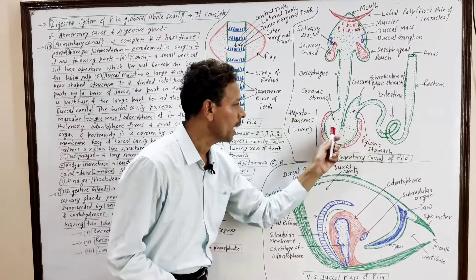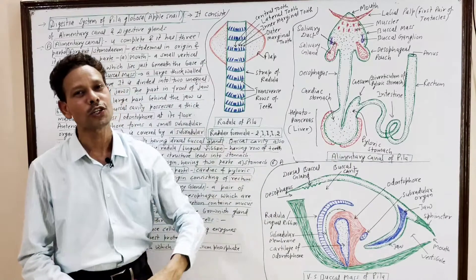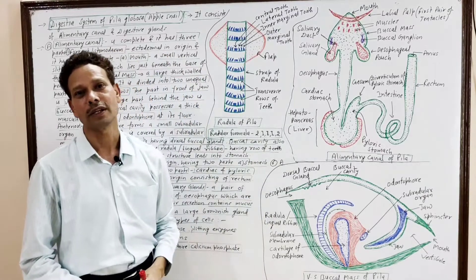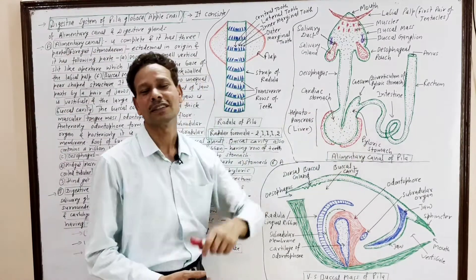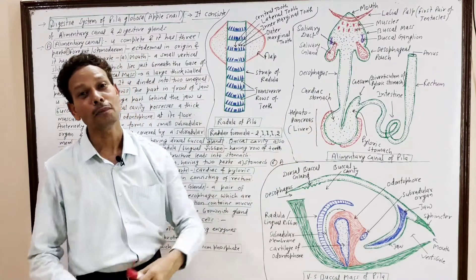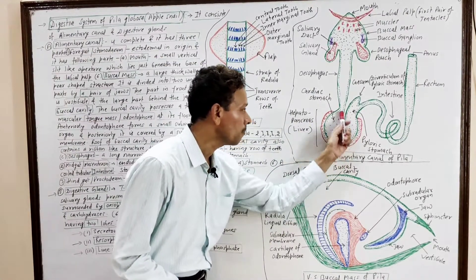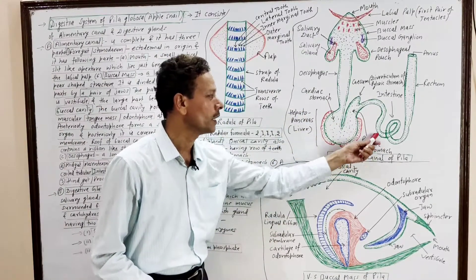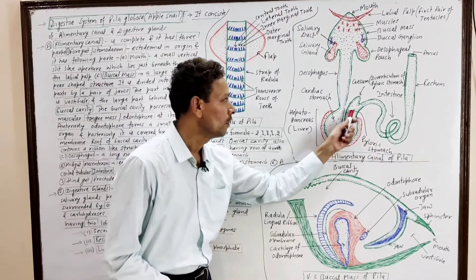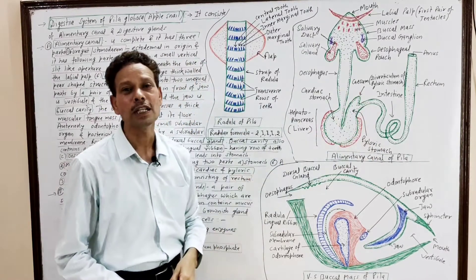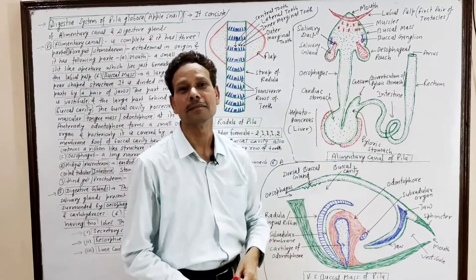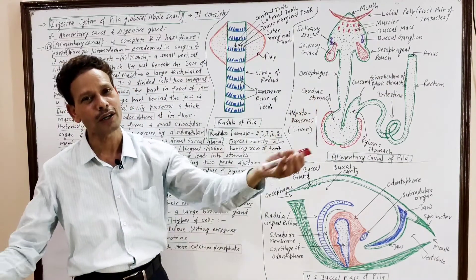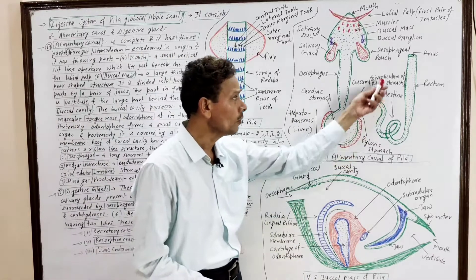The midgut (mesenteron), which includes the stomach and intestine, is endodermal in origin. The stomach is divided into two parts: the anterior larger part, the cardiac stomach, and the posterior tubular part, the pyloric stomach. The posterior terminal part of the pyloric stomach produces a cecum — a blind diverticulum of the pyloric stomach. It is a vestigial organ with unknown, non-functional significance.